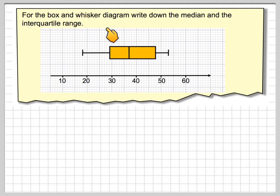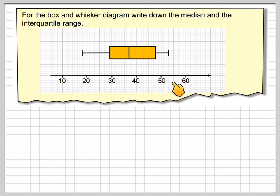For the box and whisker diagram, write down the median and the interquartile range. So here we've got a box and whisker diagram along the scale here. What we need to do, first of all, is to realise what each of these things mean on the box and whisker diagram.